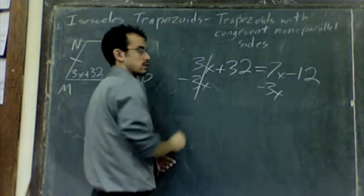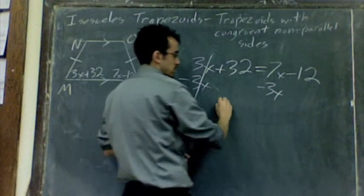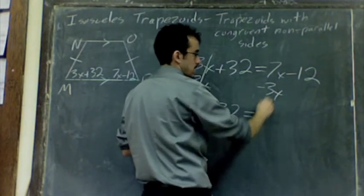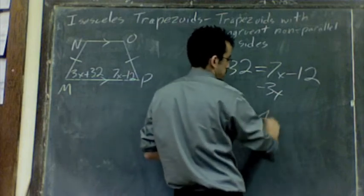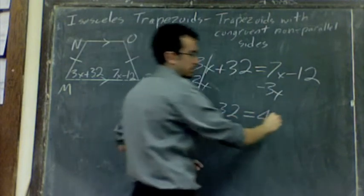The 3X is canceled, leaving with 32. Bring down my equal sign. 7X minus 3X is 4X. And then bring down the negative 12.